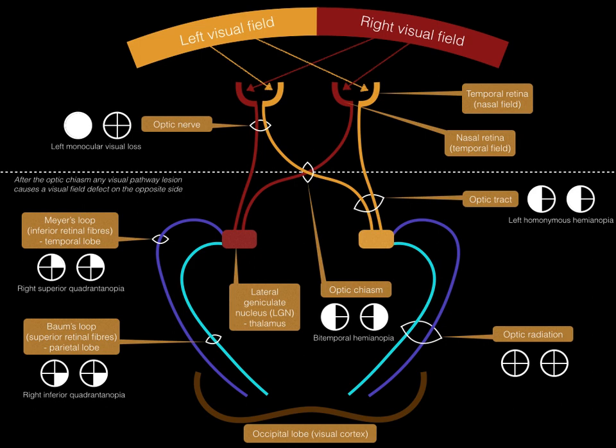If there was a lesion which affects the optic radiation on the right side, what visual field defect would you expect? A left homonymous hemianopia — the same visual field defect you would expect from a lesion affecting the right optic tract.